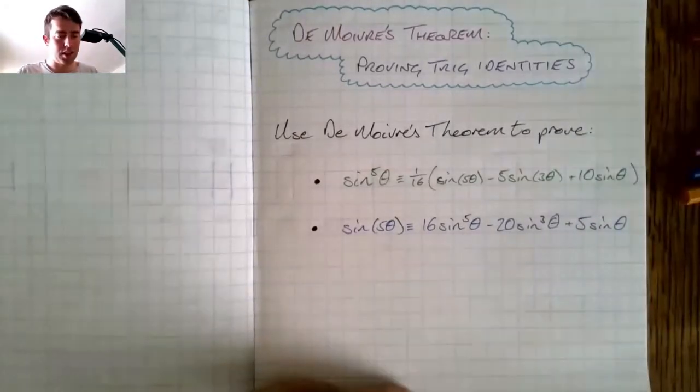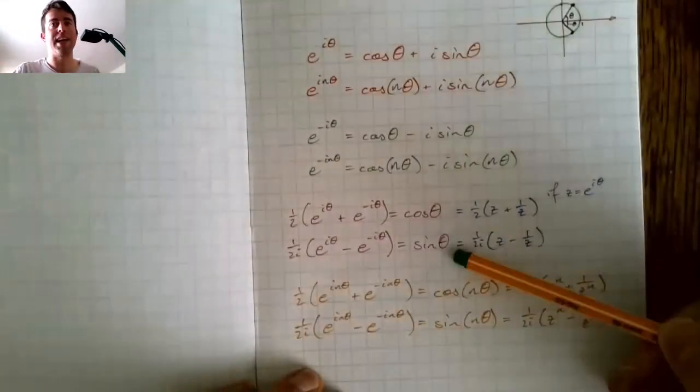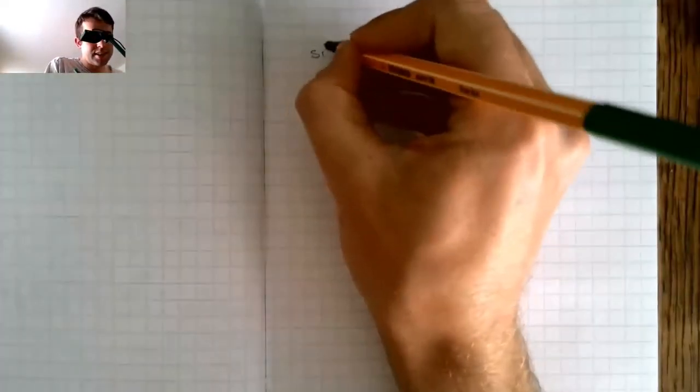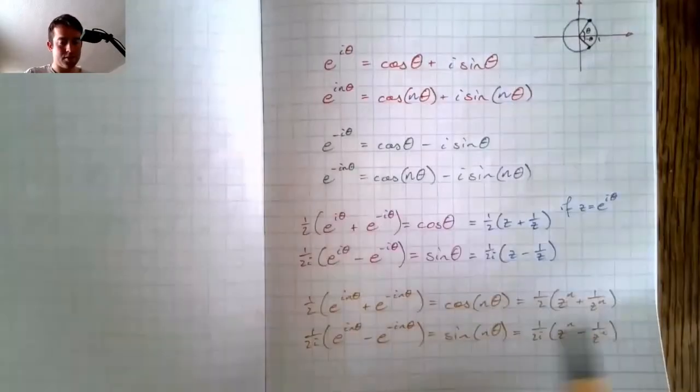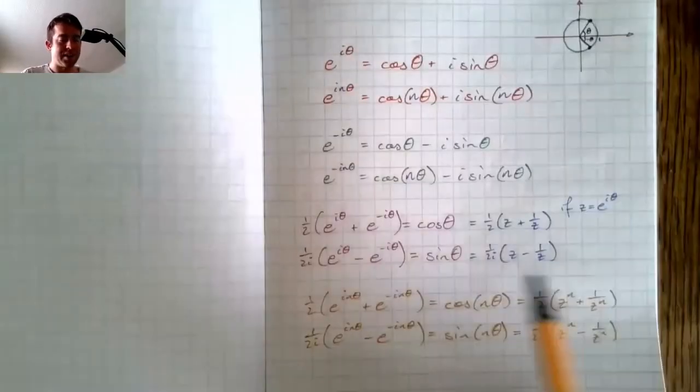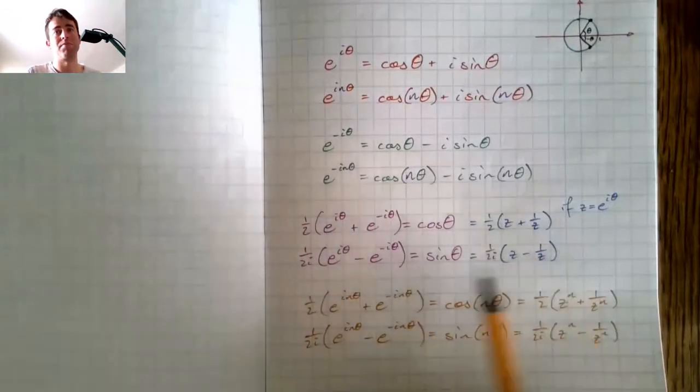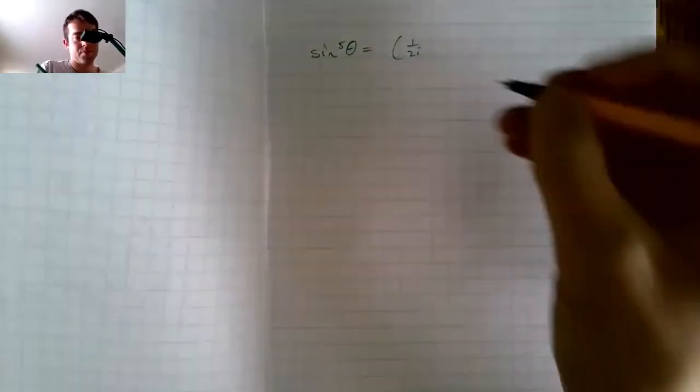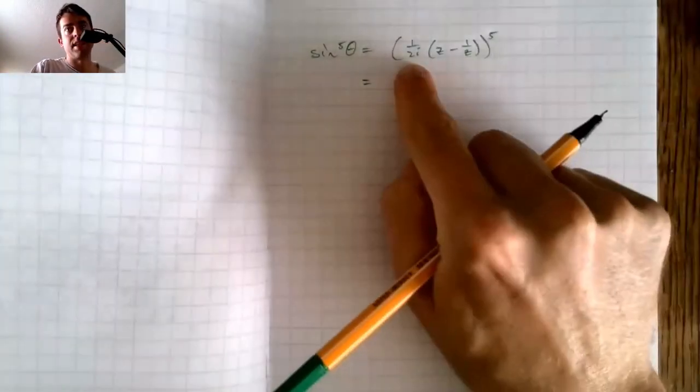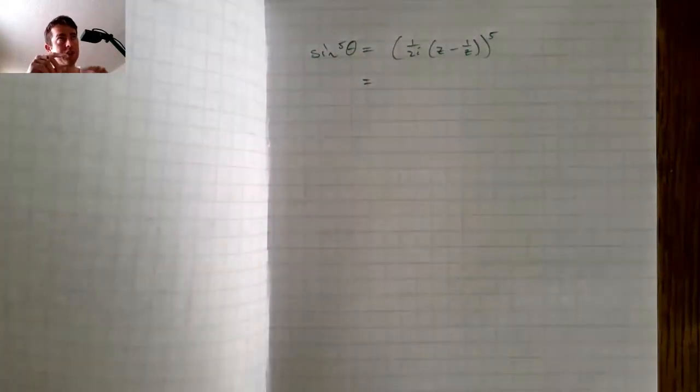How are we going to do that? So we need sine to the power of five. So I'm going to use this one here. Let's write that out. Sine to the power of five theta equals this to the power of five. Now, as I said before, we could use this, but it's just a little neater if we use this one. So we don't have to write the e to the i theta out every time. So let's use this one. z minus one over z to the power of five. Dealing with this, two to the power of five is 32. And one over i to the power of five, so i to the power of five, think about that diagram with the unit circle.